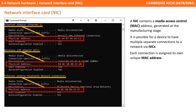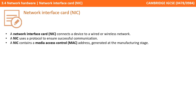We'll be looking at MAC addresses in more detail in the next video. As a summary: a network interface card connects a device to a wired or wireless network. It uses a protocol to ensure successful communication, and it contains the media access control address which is generated at the manufacturing stage.